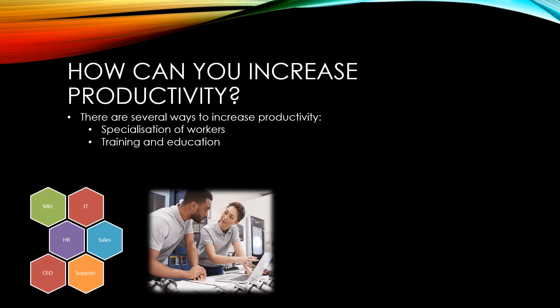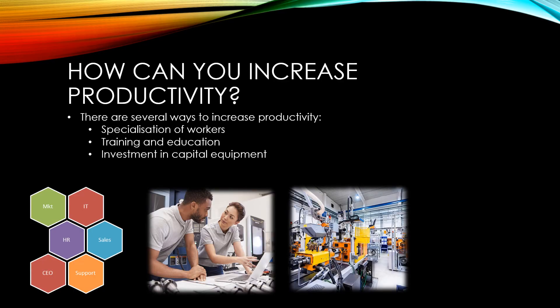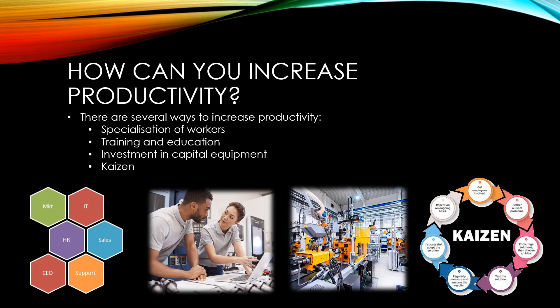Another method is through training and education. As workers become more skilled and knowledgeable, they become more productive. A third method is through investment in capital equipment — this might be large machines that completely take over the production process, or smaller machines that help workers to be more efficient. The concept of Kaizen is a Japanese business principle that has since gone around the world. The idea is to make small incremental improvements to people's workflow by including the workers at every level. Workers can suggest small improvements to their workflow which can be tested and, if successful, implemented for all workers that perform these tasks. These micro improvements, when applied across a large company, can result in huge increases in productivity.